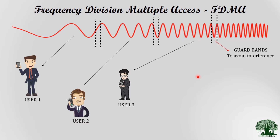Each user is separated by different frequencies, and there are intentional gaps left between each user's frequency allocation. These gaps are called guard bands, and they are deliberately introduced to avoid interference between adjacent users such as User 1 and User 2. If the guard bands are not properly sized — if the separation is insufficient — it will lead to interference between users.